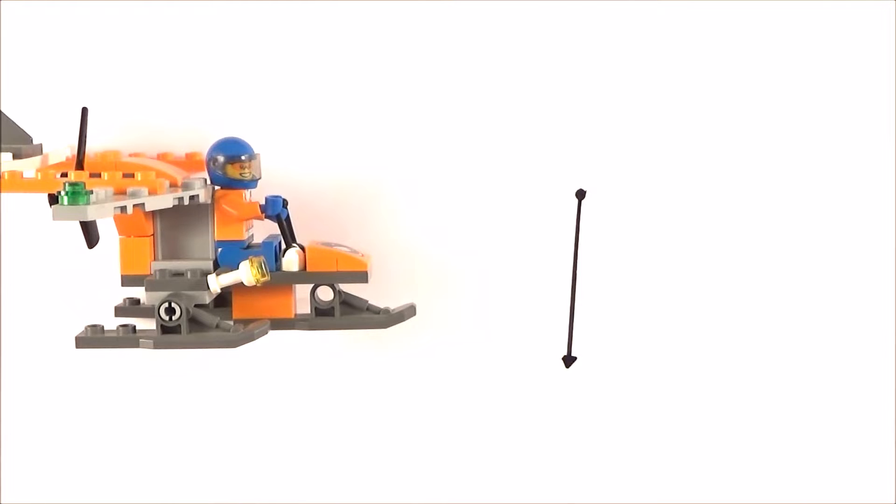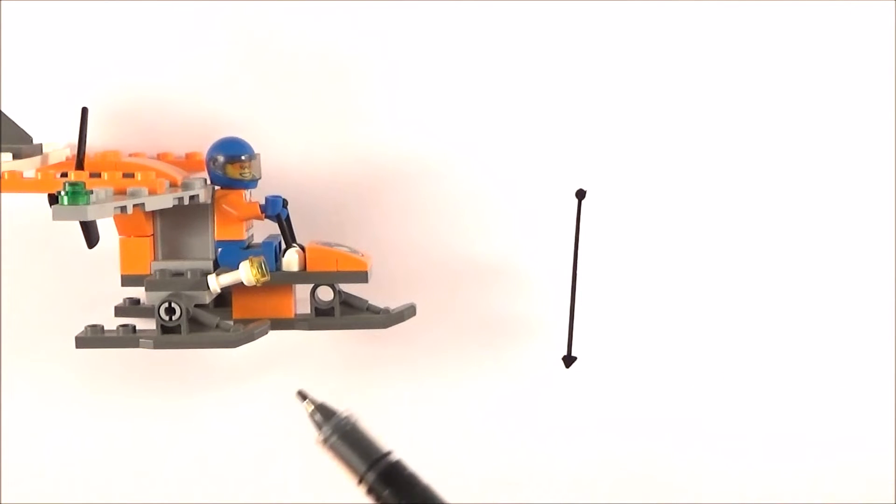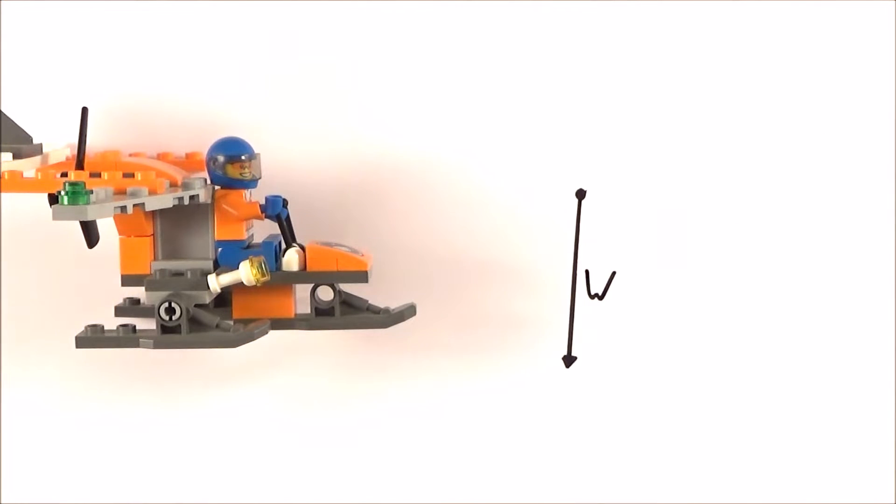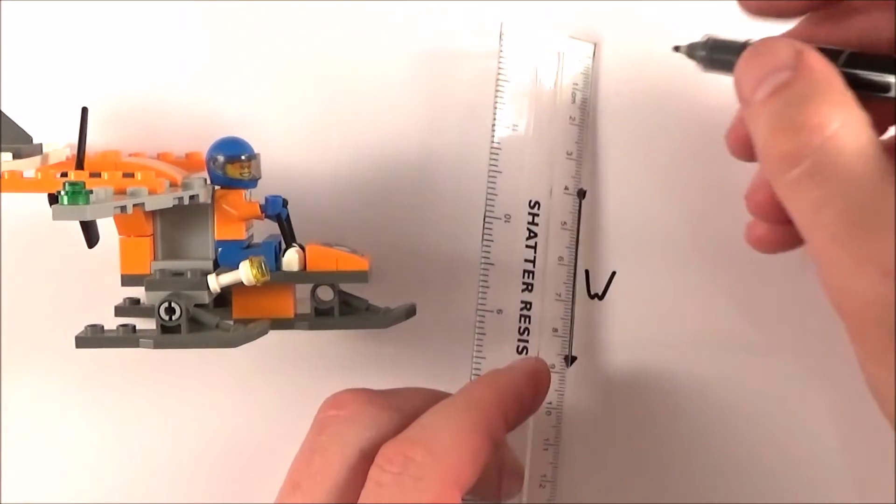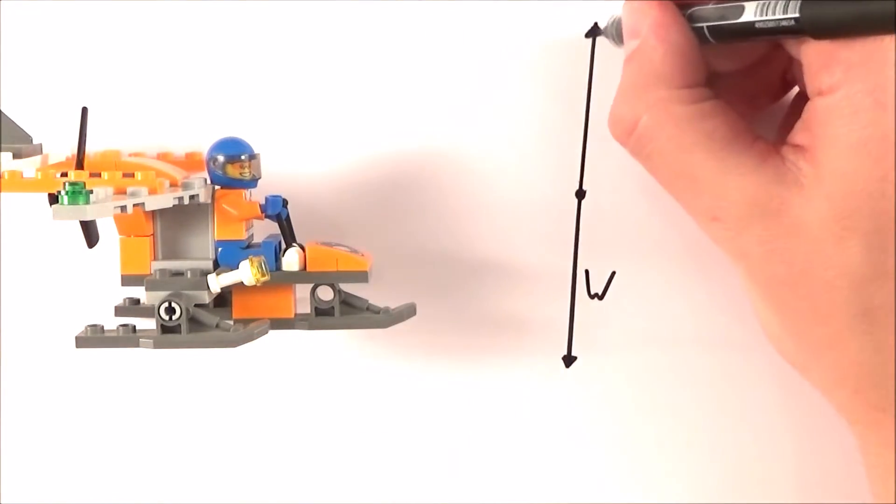Provided this is in level flight—it's not getting higher or lower, not getting quicker or slower—we can say that all the forces are going to add up to zero. If we have a weight force here, which I'm going to label W, we also have some kind of force which is actually upwards to stop it falling out of the sky. I'm going to draw this on and label it L for lift.